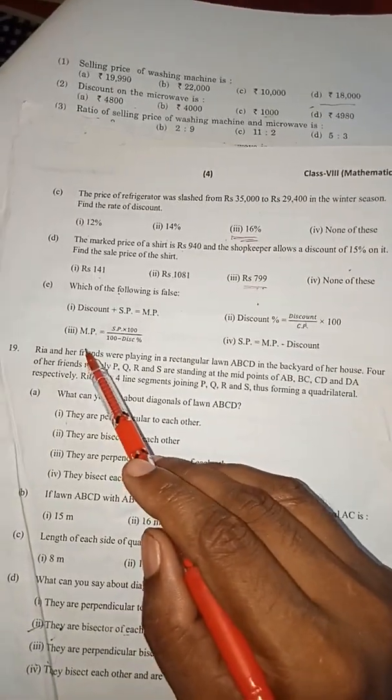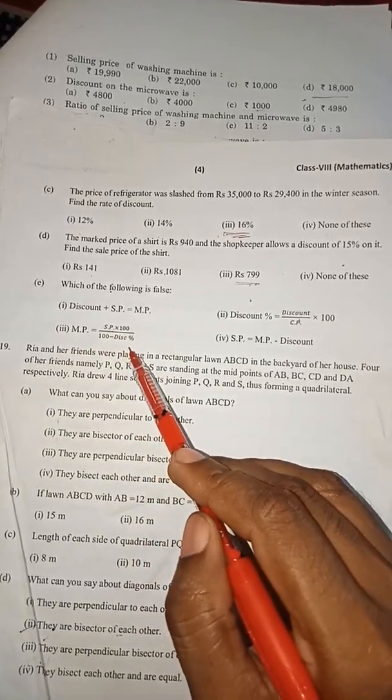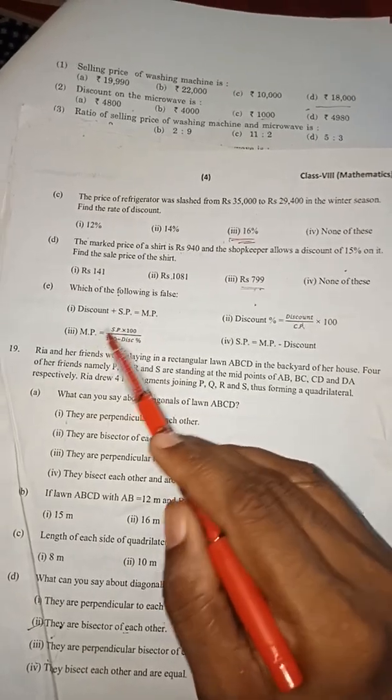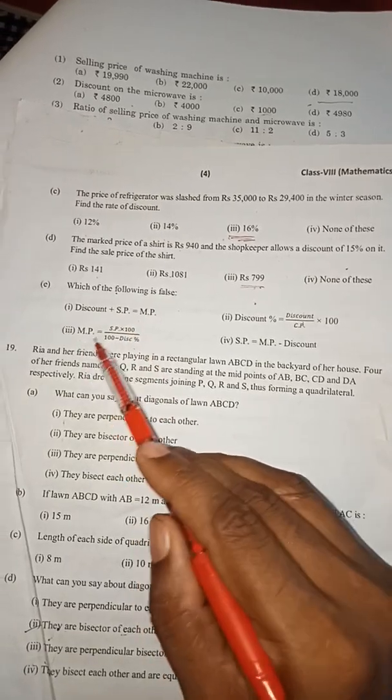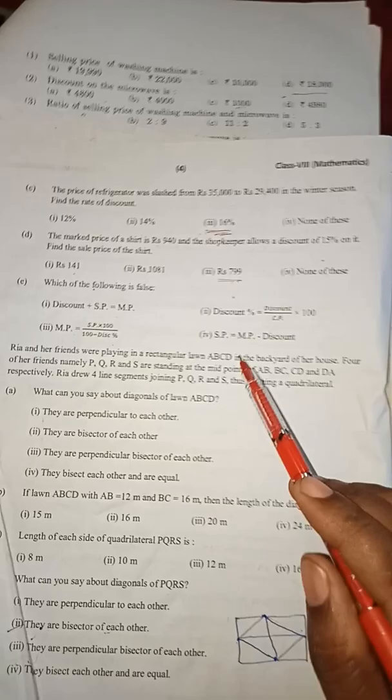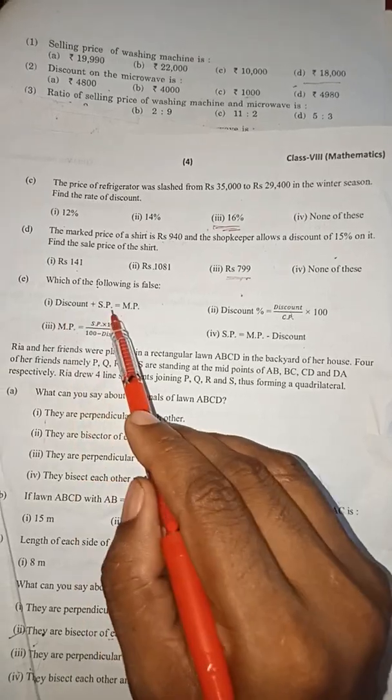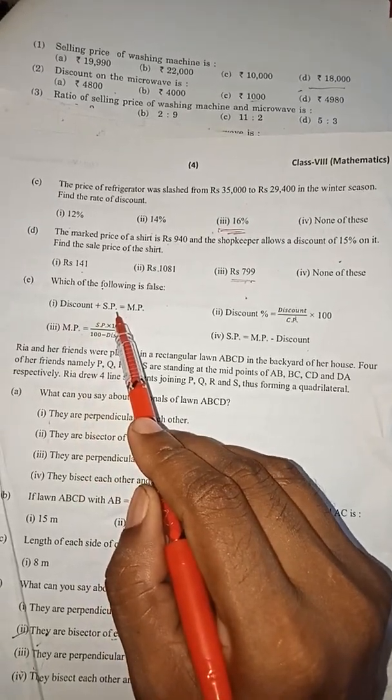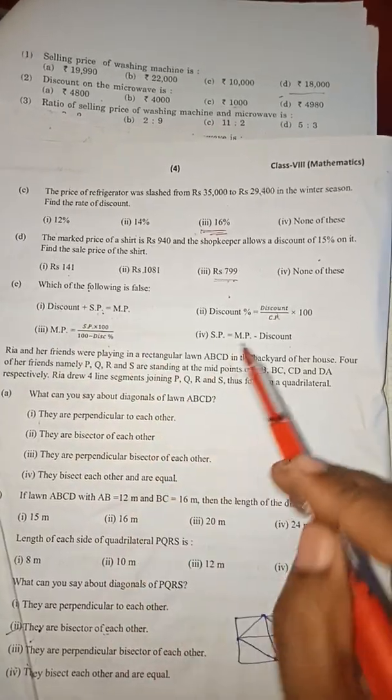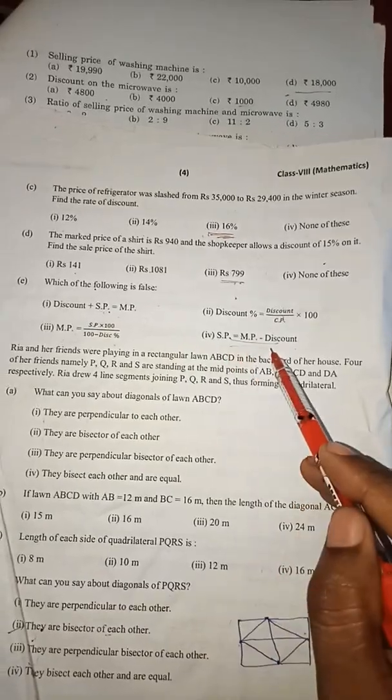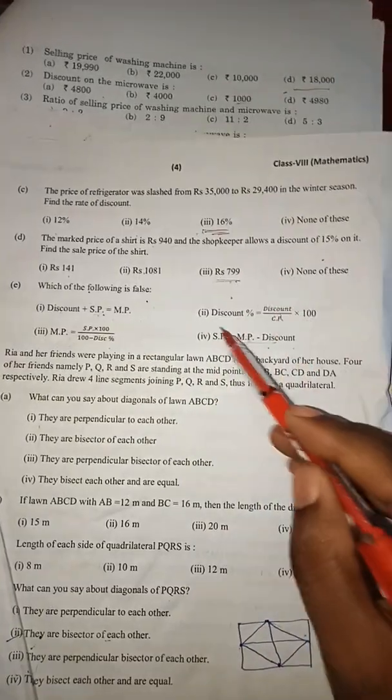Now again we come to option third: MP equals selling price into 100 by 100 minus discount percent. If you know the formula for selling price, it's MP into 100 minus discount percent, whole by 100. So I think that is also the right option. Here is the selling price equals MP minus discount. So option first - if that SP and discount, if we send it to RHS, it will be MP minus discount. So first and fourth options are same. So only - which of the following is false? So wrong. So second option is the wrong one.